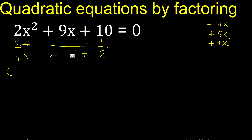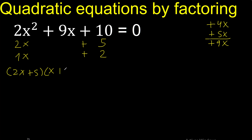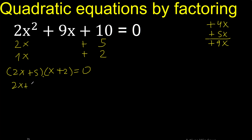Therefore like this. Here, 1 multiplied by x is x. Equal 0 multiplication. Therefore this equal 0, or this equal 0.